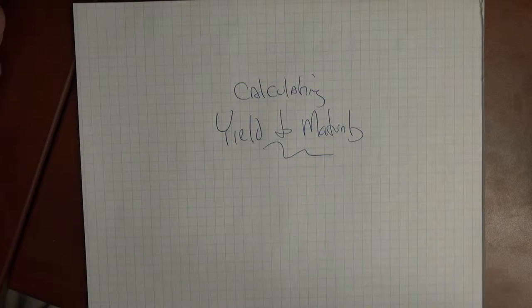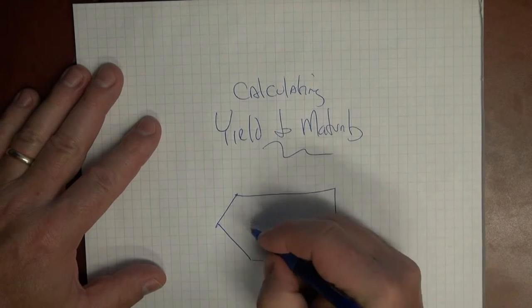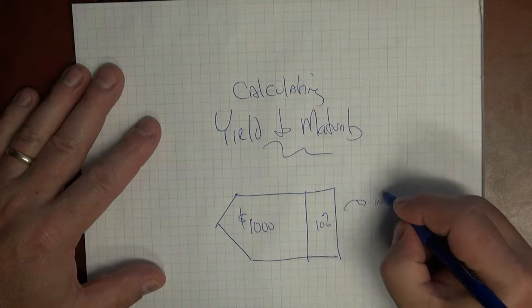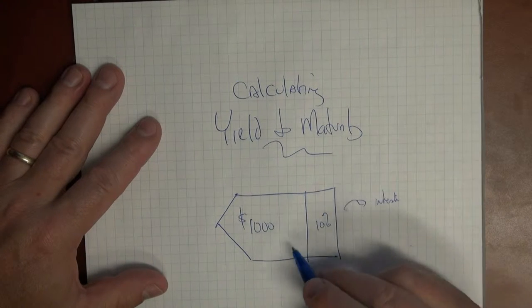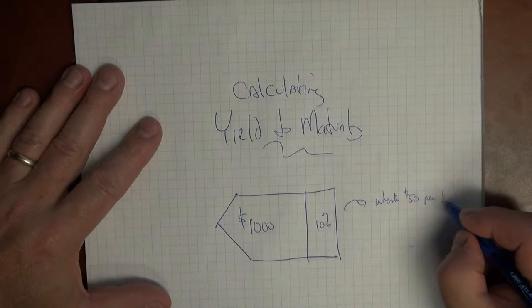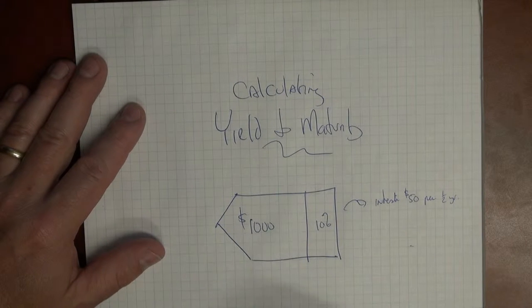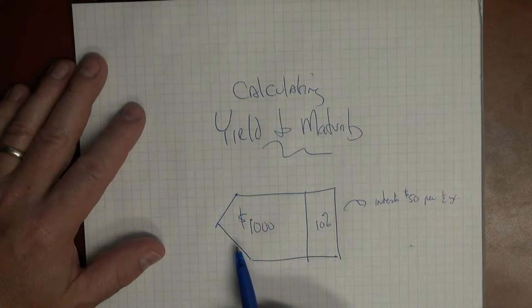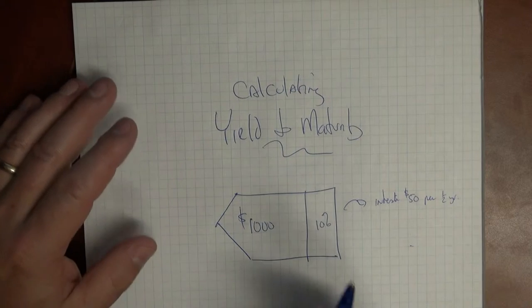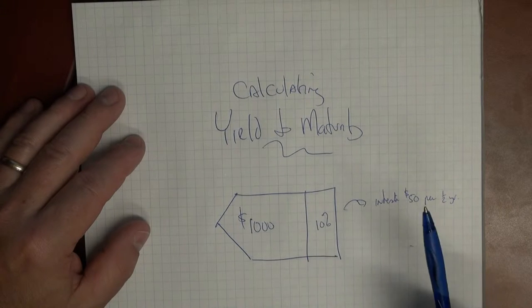You will know, let's say for example, that the interest rate is 10%. Okay, so I'll just draw a bond here. It's a $1,000 face bond, 10%. We know that the interest that you'll get on that bond will be $50 per half year. Because again, interest payments on bonds are made twice a year. So 10% would be 5% on a half year. So 5% of $1,000 would be 50. So the yield to maturity, if you keep the bond, is exactly the coupon rate. No problem there.